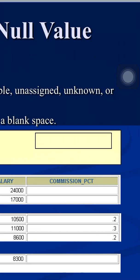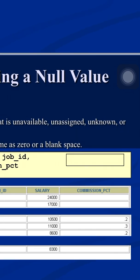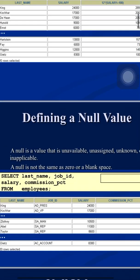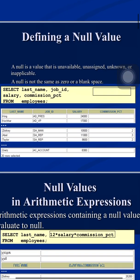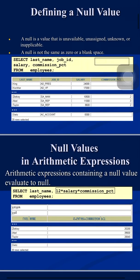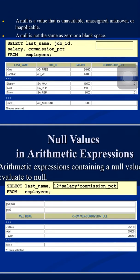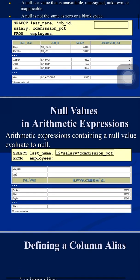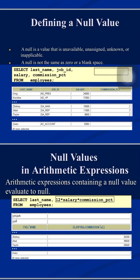In some programming languages like C or Java, printing a null value displays the word 'null', but in Oracle nothing is printed for null values. Also, any arithmetic expression that contains a null value evaluates to null in Oracle. For example, if I calculate 12 * salary * commission_pct, employees who have commission_pct will get a result, but those without commission_pct will get null for that calculation.